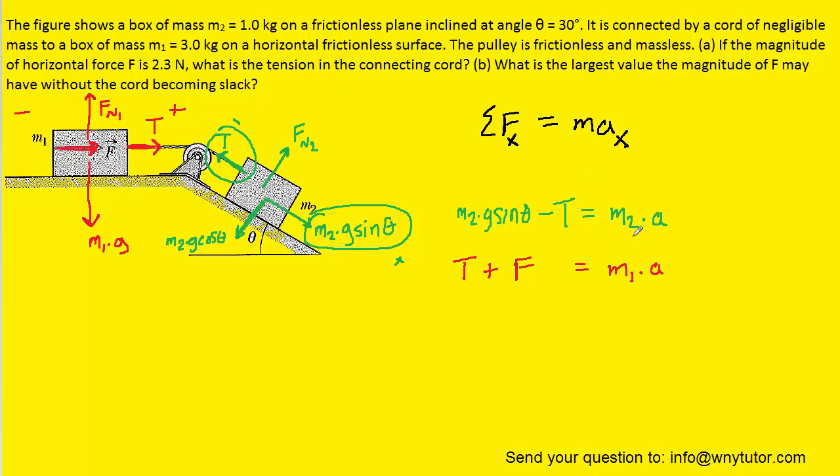Now it's important to note that the acceleration of the second block and the acceleration of the first block will be the same because they are connected by that rope. So however rapidly M2 accelerates, that is exactly how rapidly M1 must also accelerate because they're connected. So it's not necessary to call this a2 and a1. We're just going to call them a.